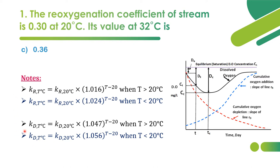These are the four formulas for the reoxygenation and deoxygenation coefficients. In the oxygen sag curve, the critical deficit point is visible, and the oxygen deficit at any time t can be identified. We will see the deficit formulas in the upcoming question.